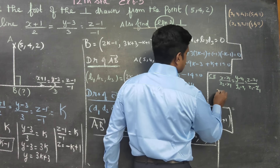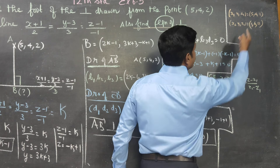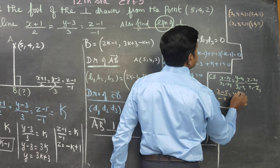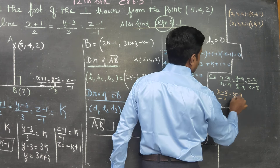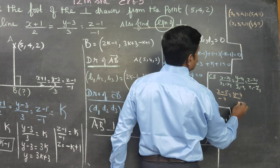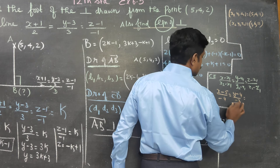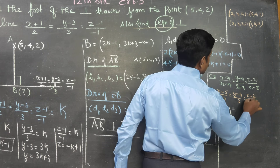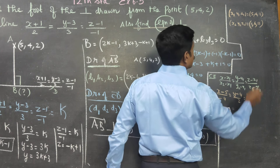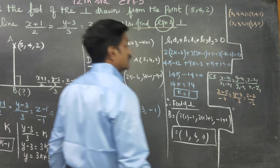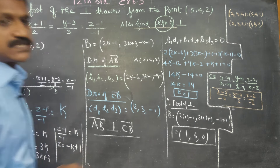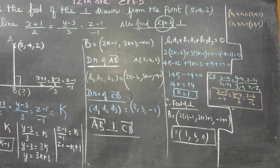Substituting: (x - 5)/(1 - 5) = (y - 4)/(6 - 4) = (z - 2)/(0 - 2), which gives (x - 5)/(-4) = (y - 4)/2 = (z - 2)/(-2). This is the Cartesian equation of the line AB. If you have two points, you can find the equation of the line.